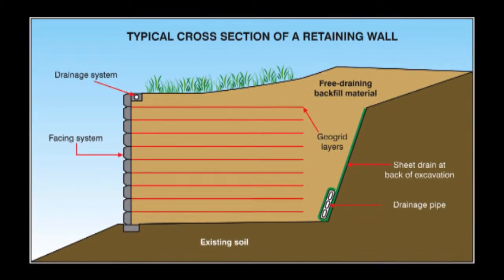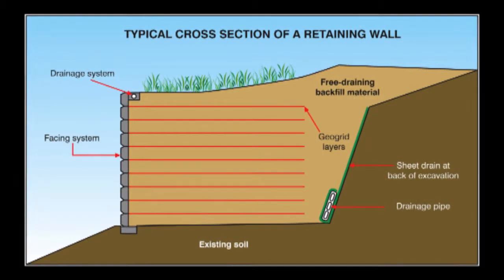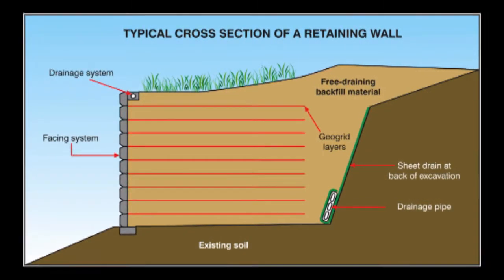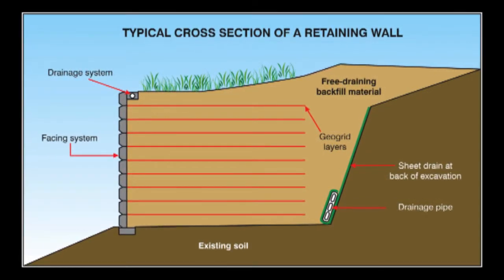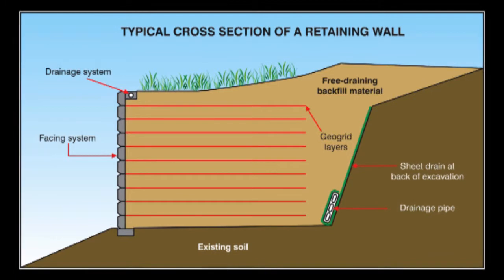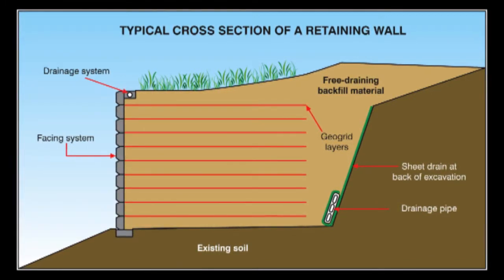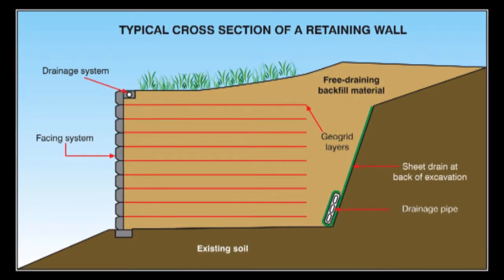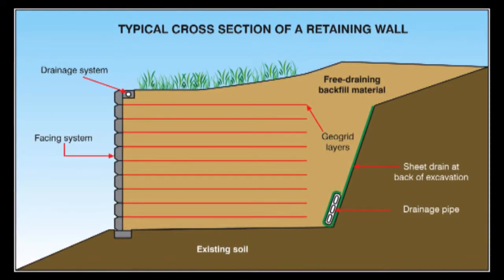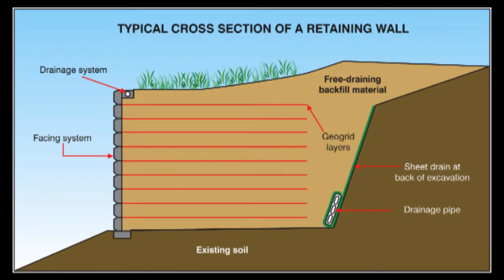The gravel is free draining, which prevents direct rainfall from remaining in the system and building up pressure on the wall. Groundwater escapes the system via drainage at the back of the excavation. Geosynthetic sheet drains are often used for this purpose.